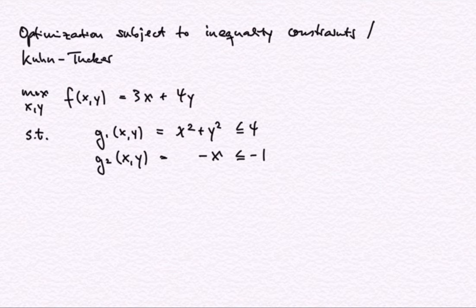Welcome back to my series of videos on mathematics for economists. In this video, I'm going to go through two examples for optimization subject to inequality constraints. I'll specify the Kuhn-Tucker conditions, identify candidate points that satisfy them, then evaluate the objective function to decide which yields the highest value. Then I'm going to check sufficiency and constraint qualification.